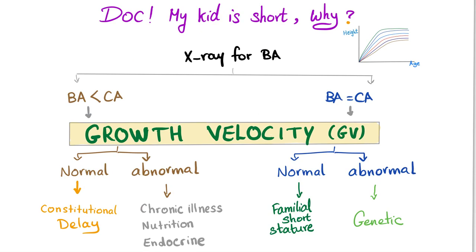A mom comes in and says her kid is short. To investigate, you order an x-ray to determine the bone age. There is the chronological age — the actual age from the birth certificate, say 10 years old. The bone age is different; it's determined by a radiologist from an x-ray, usually of the wrist.